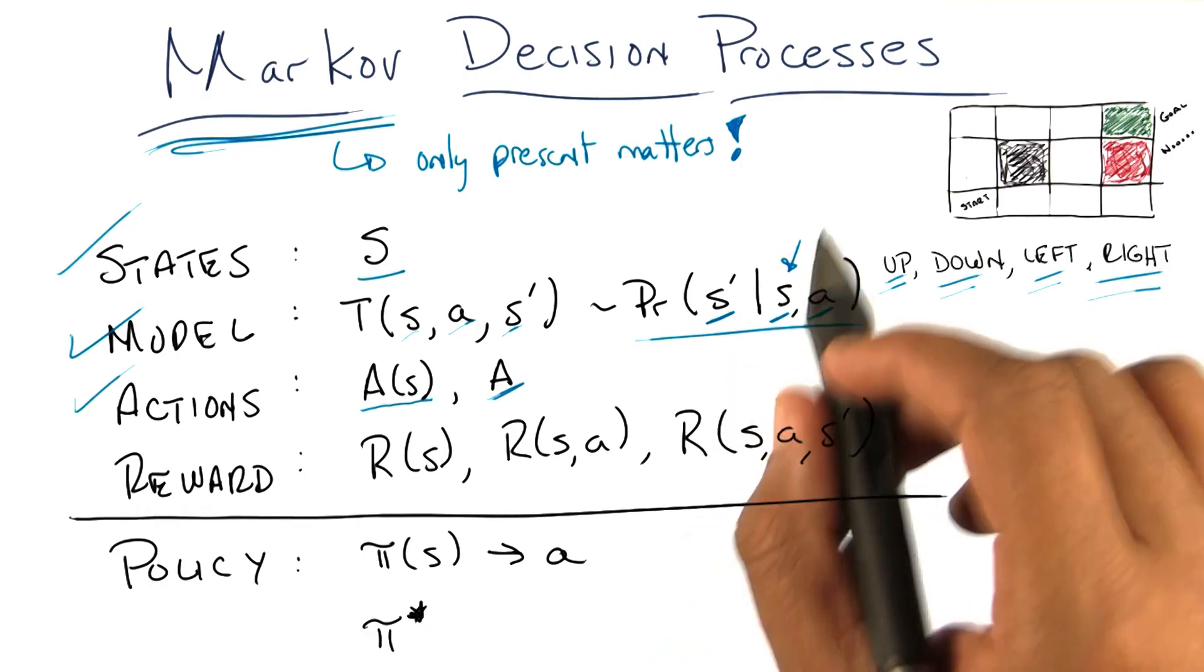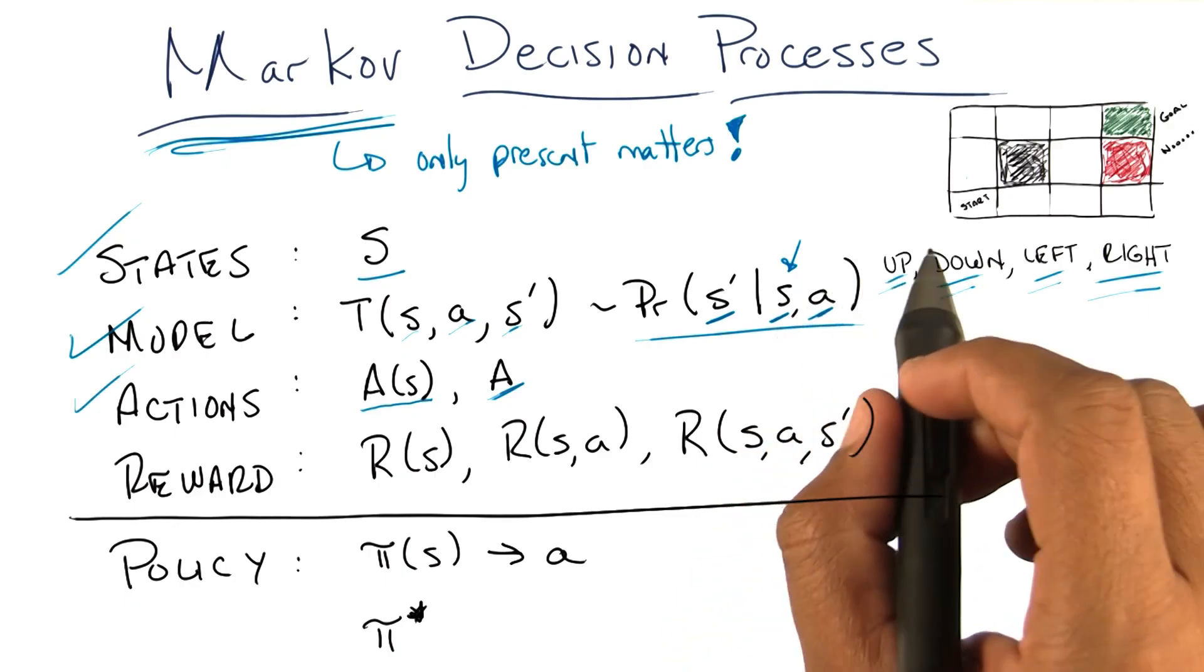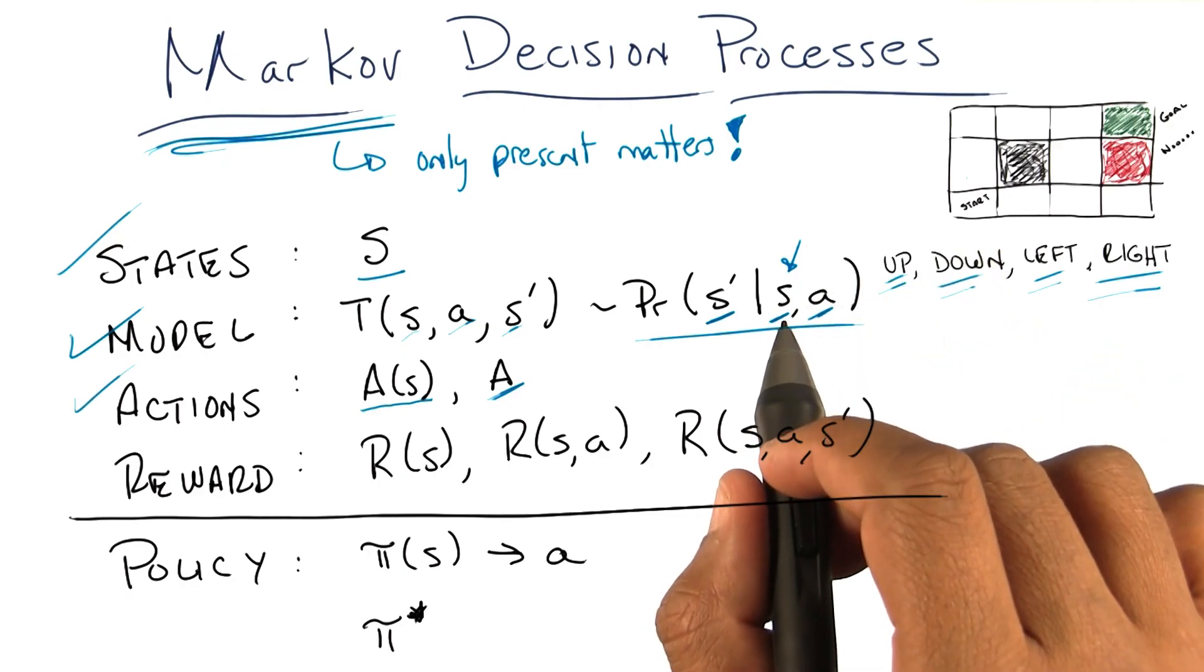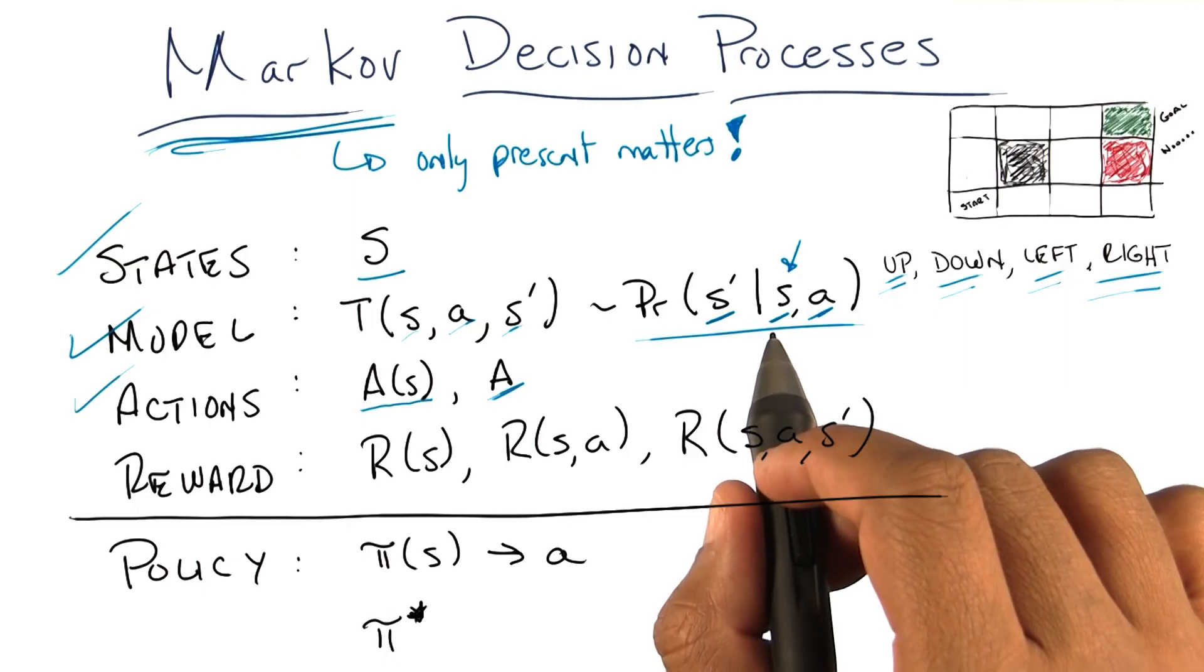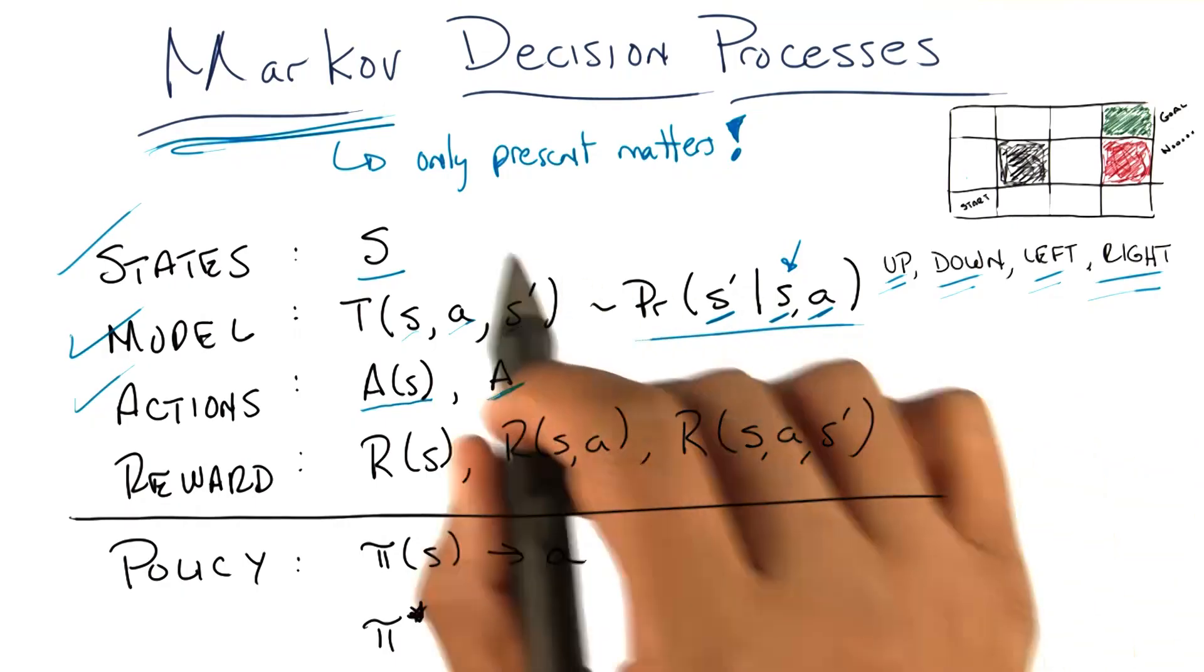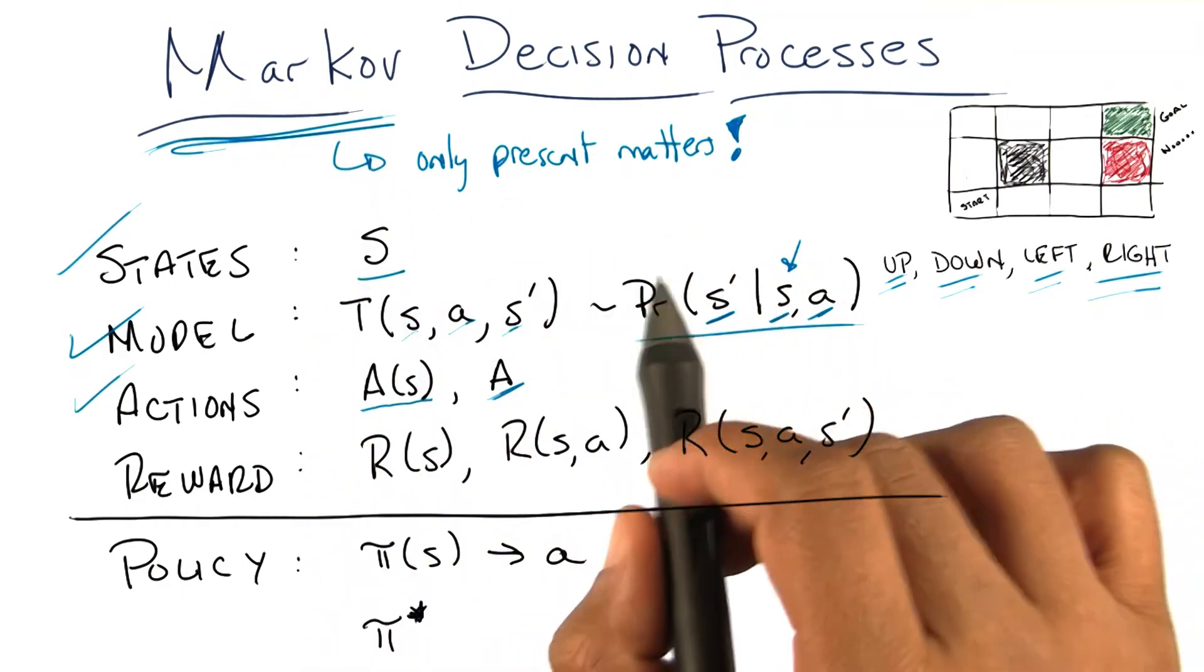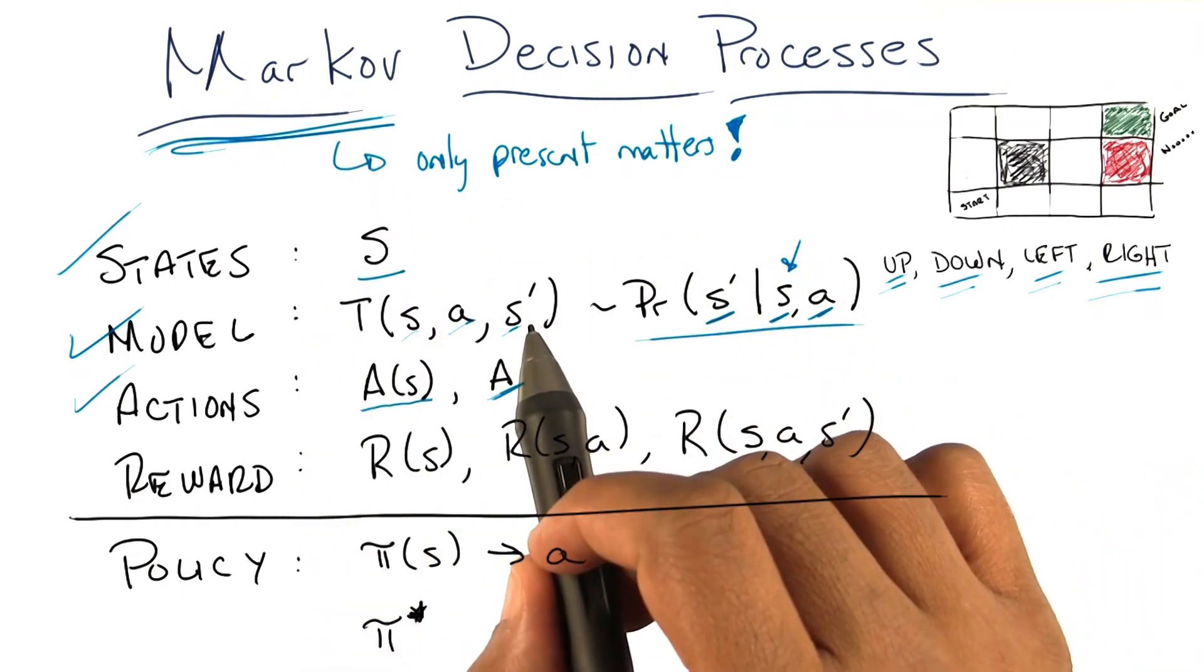The obvious problem with that, of course, is that if you have to remember everything from the beginning of time, you're only going to see every state once. And it's going to be very difficult to learn anything. But that Markovian property turns out to be important and it actually allows us to solve these problems in a tractable way.